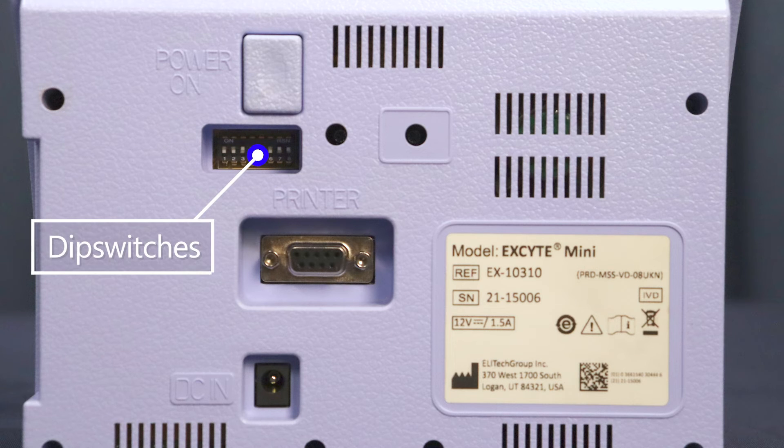DIP switches are located on the back of the unit to control settings such as test time and temperature correction, in addition to defaults for the printer, internal fan, and graph generation.